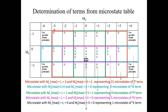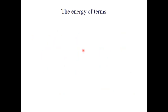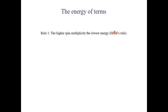Now we have determined all the terms, so let us look at their relative energies. First, the higher the spin multiplicity, the lower the energy — this follows from Hund's rule, which says we should maximize the number of unpaired spins. So in our d2 example, the triplet terms should have lower energy than the singlet terms.